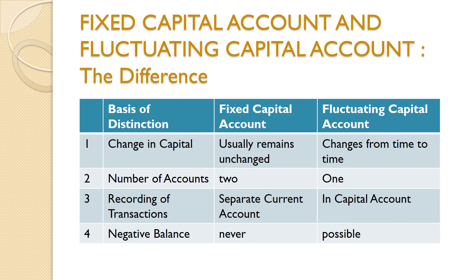Next, let's see the difference between fixed capital account and fluctuating capital account. First, change in capital: in fixed capital account, the balance in capital accounts usually remains unchanged during the lifetime of the business, except when new capital is introduced or withdrawn. But in case of fluctuating capital, it always changes from time to time — it never remains fixed.